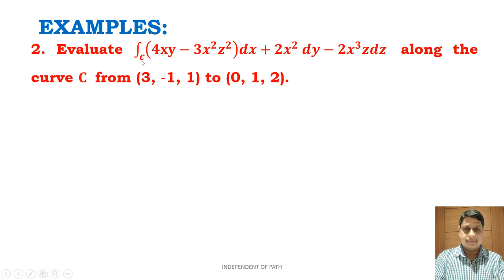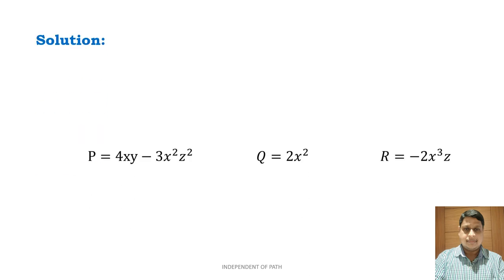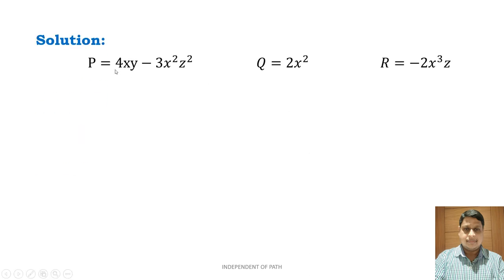Next example: evaluate ∫_C (4xy − 3x²z²) dx + 2x² dy − 2x³z dz along the curve C from (3, −1, 1) to (0, 1, 2). In solution, P is the coefficient of dx: P = 4xy − 3x²z²; Q is the coefficient of dy: Q = 2x²; and R is the coefficient of dz: R = −2x³z.